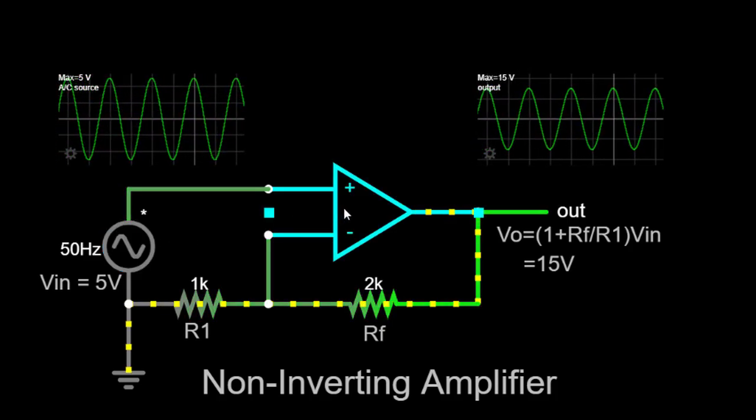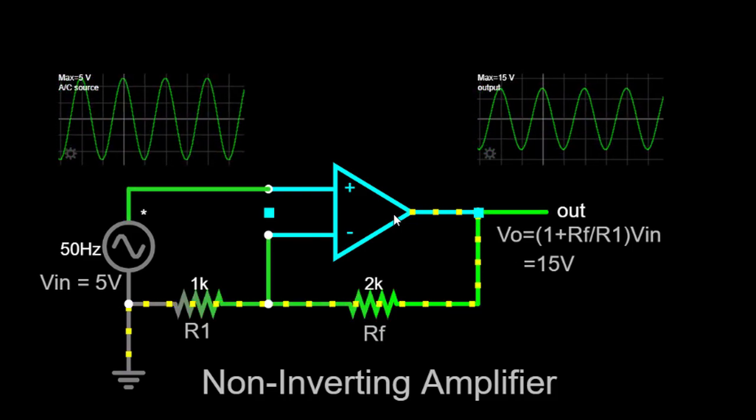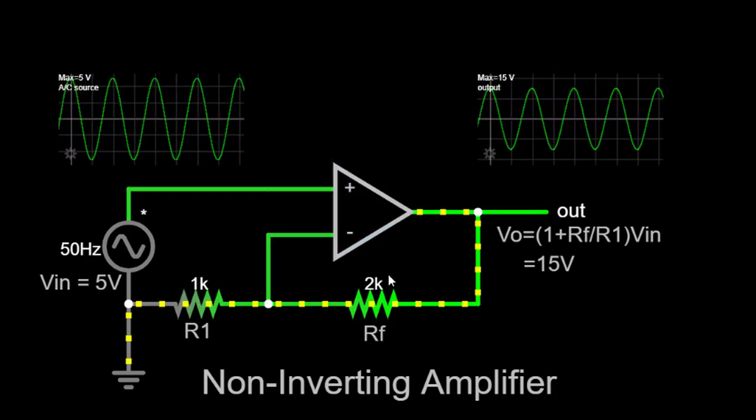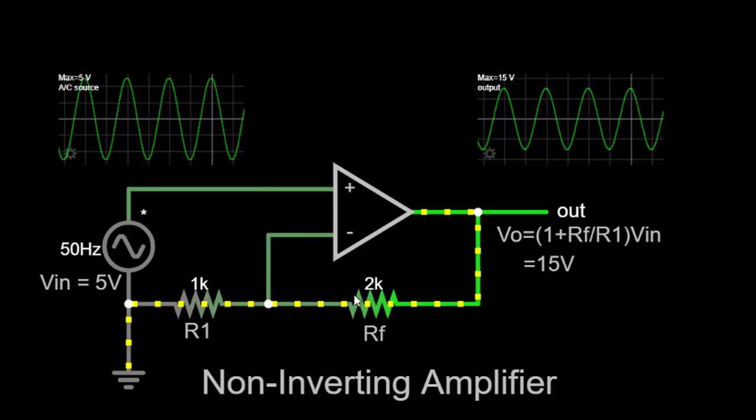The op-amp is the heart of the circuit, and it provides high gain and excellent linearity. The resistors are connected in a specific configuration to determine the amplification factor and input-output relationship.